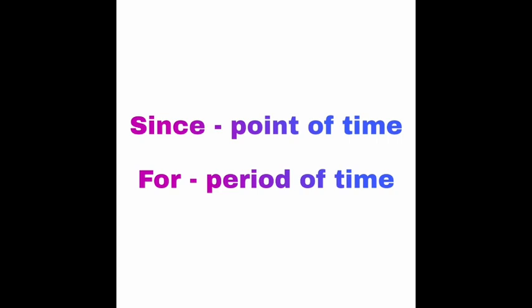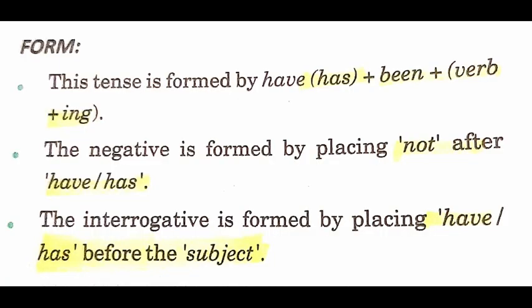Now let's look at the structure of this tense. It is formed by 'has/have + been + verb in -ing form.' For example: 'I have been jumping since morning,' 'I have been playing since morning,' 'I have been studying since morning.'